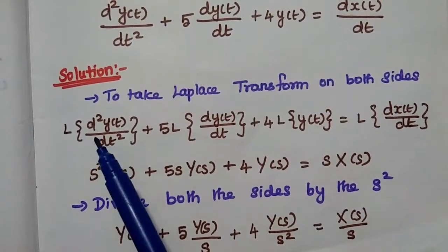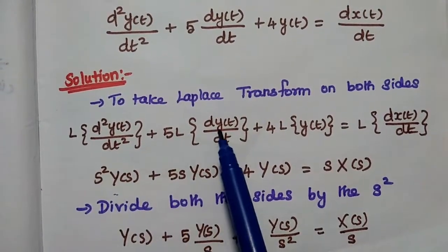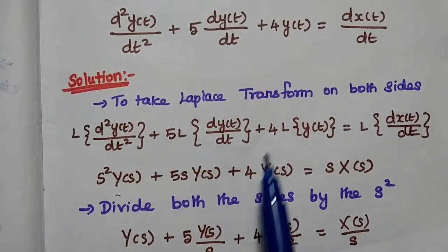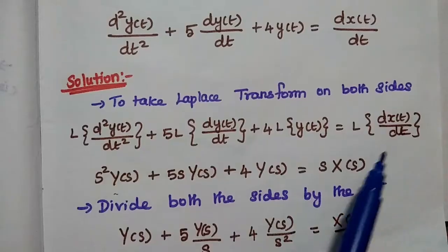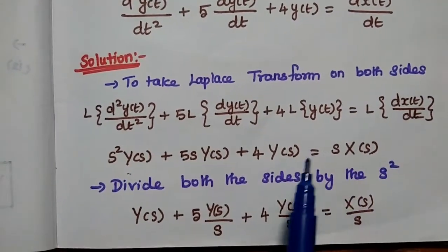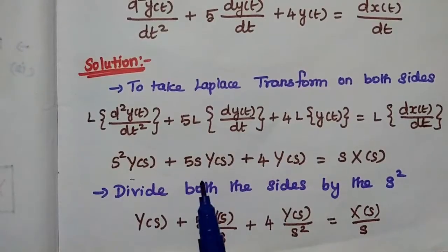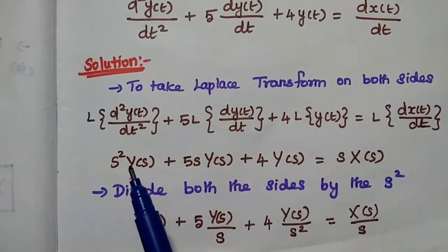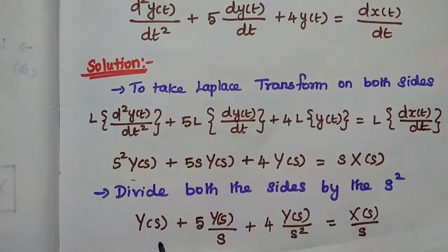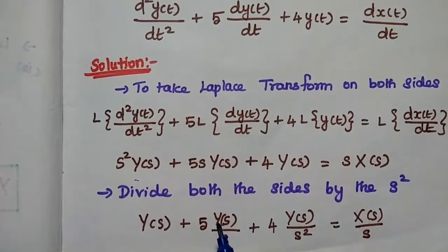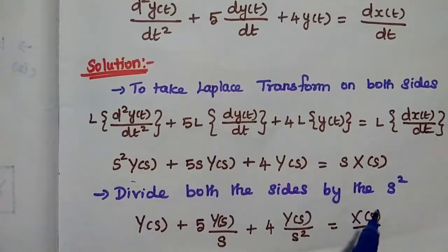As we know, the Laplace transform gives S squared Y of S plus 5S Y of S plus 4Y of S equal to S times X of S. In the next step, we divide both sides by the highest power of S, which is S squared. Dividing all terms by S squared, we get Y of S plus 5Y of S by S plus 4Y of S by S squared is equal to X of S by S.